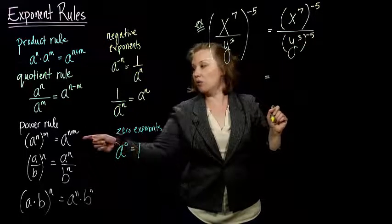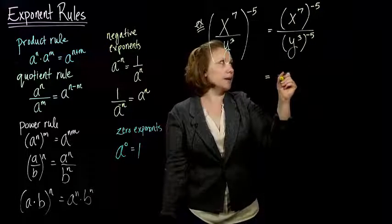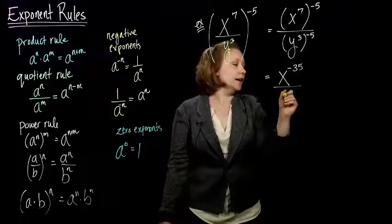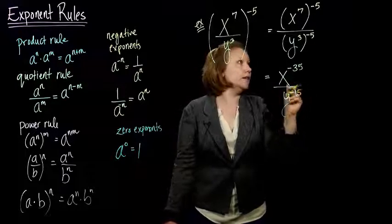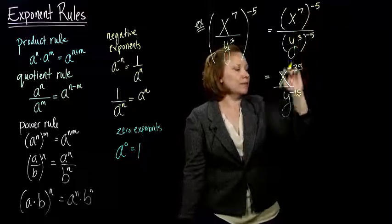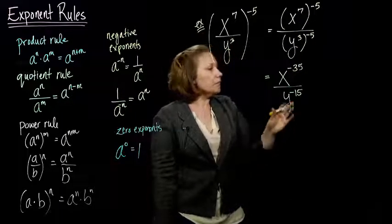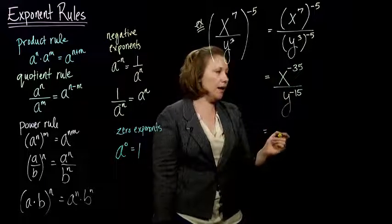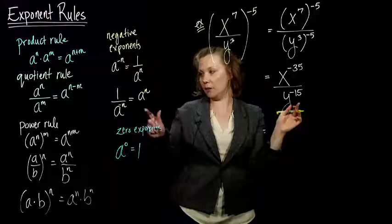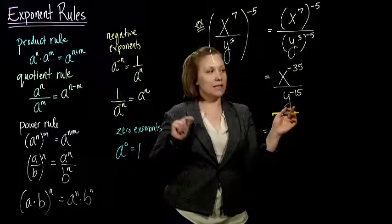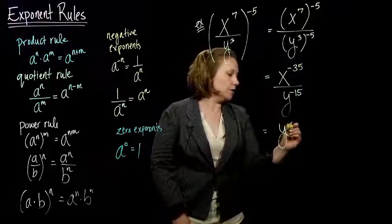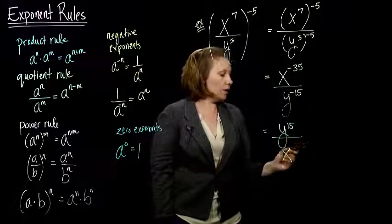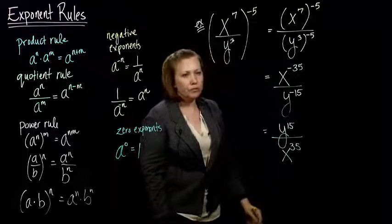Now, can you see what rule we can use next? Next we can use the power rule, where a power is raised to a power. We've got a number raised to a power raised to a power, and another number down here, same scenario. Our power rule tells us we multiply the exponents. This becomes x to the negative 35. And on the bottom we have y to the negative 15. 3 times 5 gives me negative 15. 7 times negative 5 gives me negative 35. We're almost done. The only problem we have left is we've got these negative exponents.